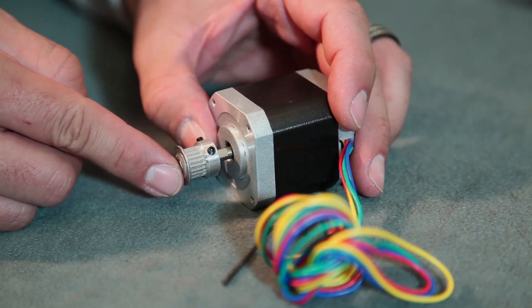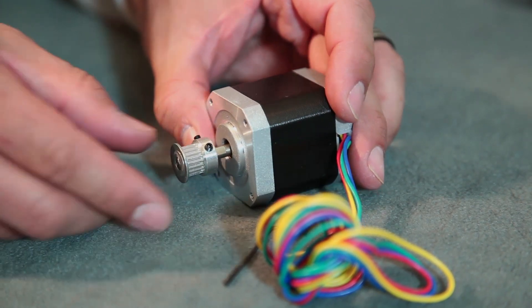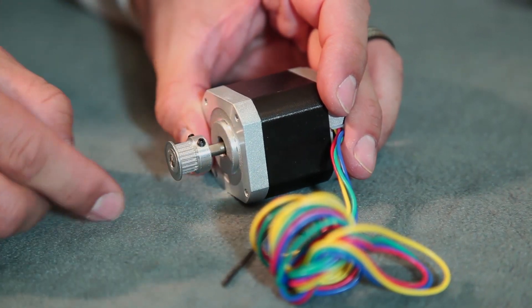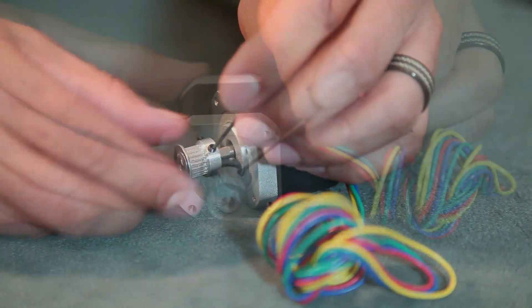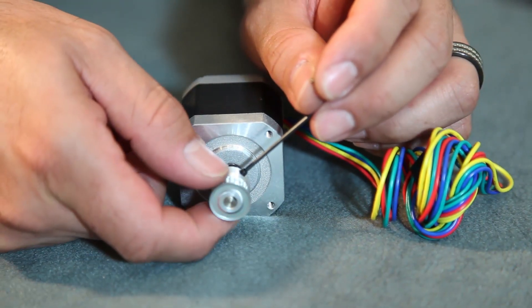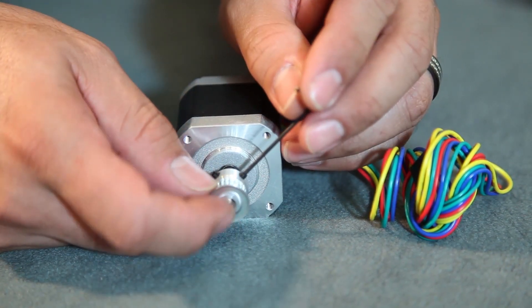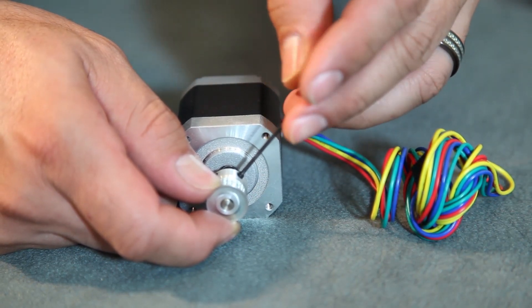You want the shaft to be flush with the end of the gear and make sure one of those allen screws is aligned with the flat side of the shaft. When you're tightening it, hold it in place, keep the alignment, and tighten it with the allen wrench provided.